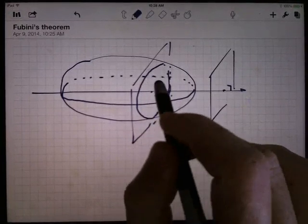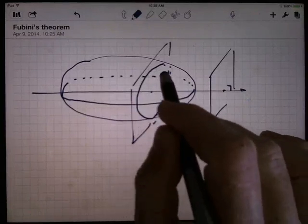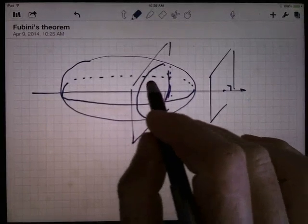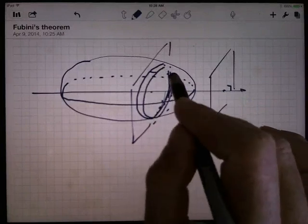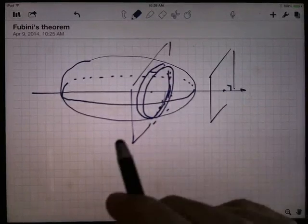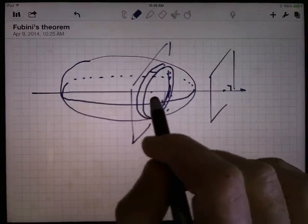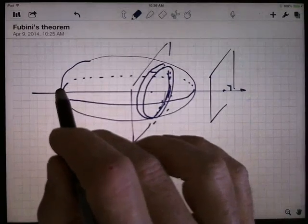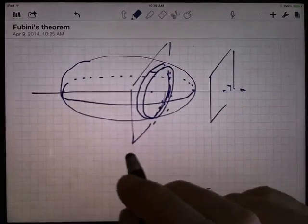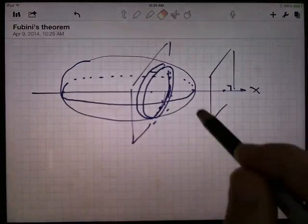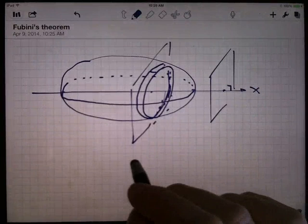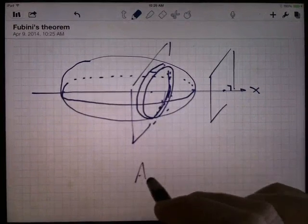And what we did in Calc 2 is we said, if I could calculate the area of that cross-section, and then I'd give it a little bit of thickness, and so you get this little bit of volume, and you'd add up all those little bits of volume for all the slices all the way from over here to over there. If that's the x-axis, let's say,